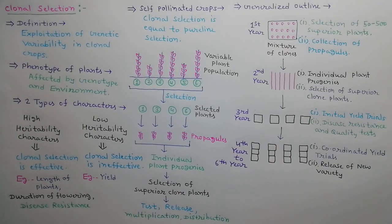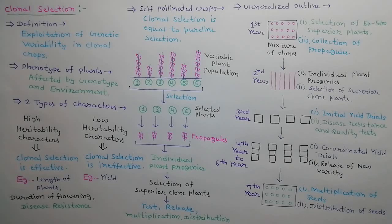From the fourth to sixth year, coordinated yield trials are performed. Clones superior than the check variety are released as a new variety. In the seventh year, seeds of the released variety are multiplied and distributed to farmers.